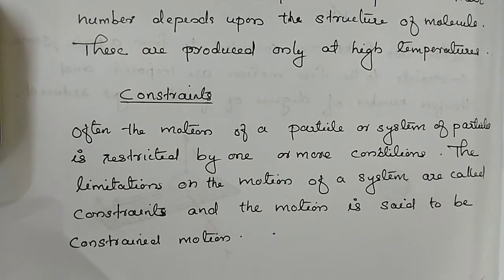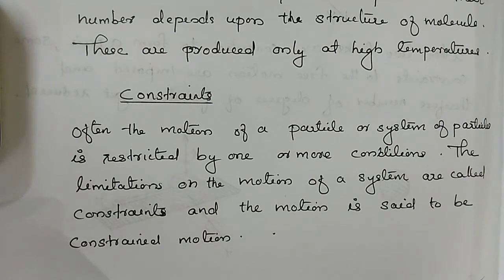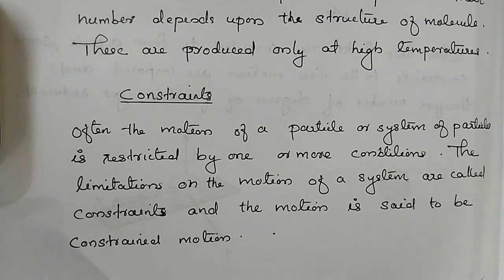Next is constraints. By definition, constraint means the limitations on the motion of a system — that is, when there is any restriction on the free motion of the system, that restriction is known as a constraint. Examples of constraints are holonomic constraints, non-holonomic constraints, scleronomic constraints, etc.